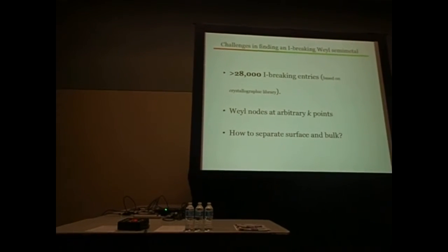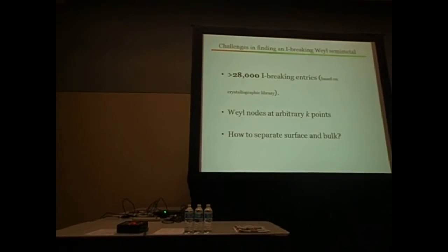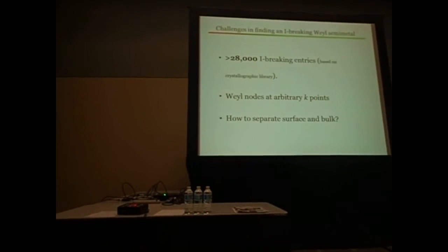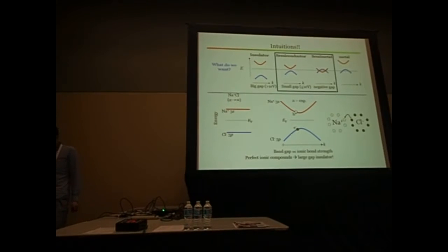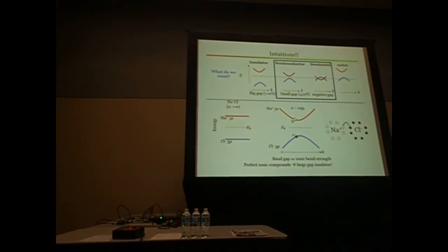This is obviously a huge number. For each compound, if you want to either conclude or exclude the existence of Weyl nodes, you actually have to calculate the band structure throughout k-space because Weyl nodes are not at high symmetry lines. They're at arbitrary k points. This means a huge amount of computation for each compound. Now we have 28,000 of them. Let me show you. This CSD is a crystallographic library. You can search based on the space group number. For example, here, number three and four are both space inversion breaking. You hit one, you've got more than 800. If you do all the inversion-rated space groups, you get that 28,000 number.